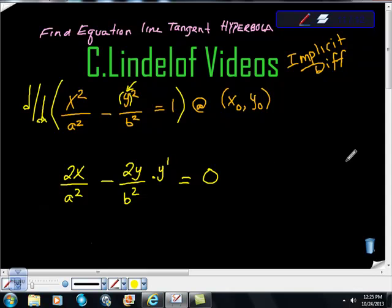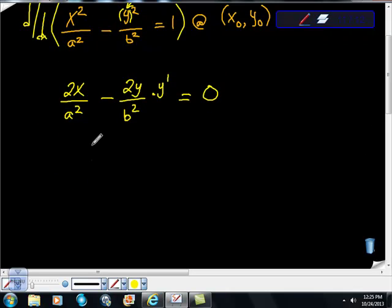is equal to 0. I'm going to subtract this from both sides, I'm going to do a little bit of quick algebra here, I'm going to subtract 2x over a squared from both sides,